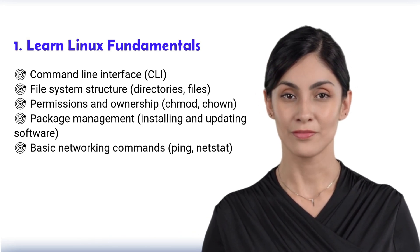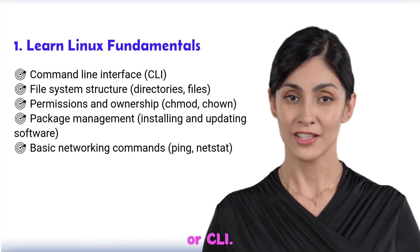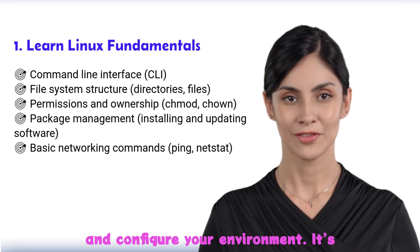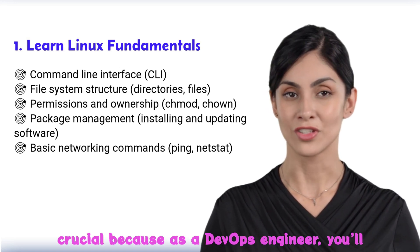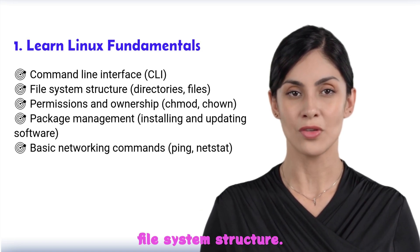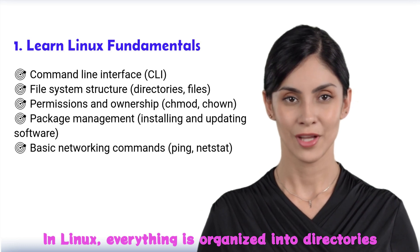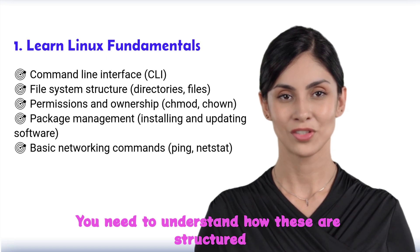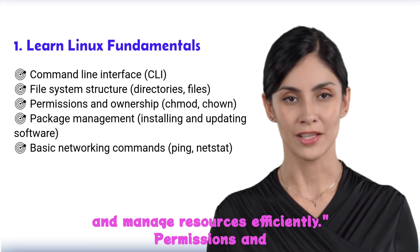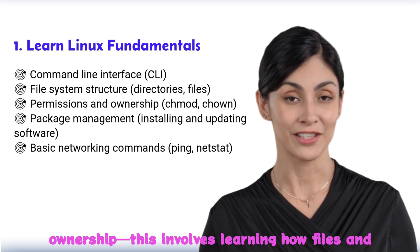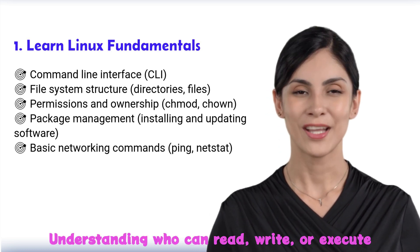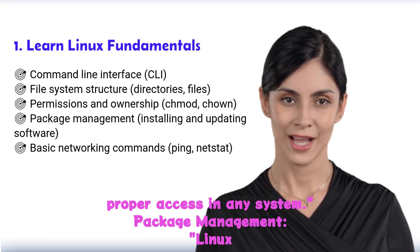First up is the Command Line Interface, or CLI — how you interact with the Linux system directly, typing commands to navigate, control, and configure your environment. It's crucial because as a DevOps engineer, you'll spend a lot of time working in the CLI. Next is the File System Structure: everything is organized into directories and files, so you need to understand how to navigate the system, find files, and manage resources efficiently. Then there's permissions and ownership, using commands like chmod and chown — understanding who can read, write, or execute files is key for maintaining security.